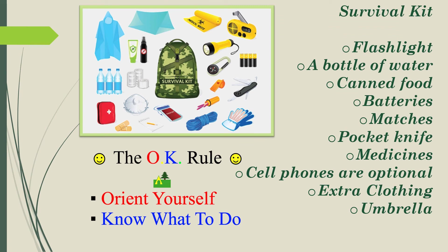You should be ready for disasters in your area. Anywhere, you need to have a survival kit: flashlight, a bottle of water, canned food, batteries, matches, pocket knife, medicines, cell phones are optional, extra clothing, umbrella. And don't forget about the OK rule.